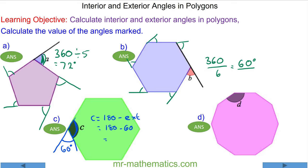For question D, again, we're going to work out the interior by first calculating the exterior, which is 360 divided by the number of sides, which in this case is 10. So this is going to be 36 degrees.